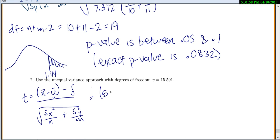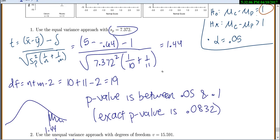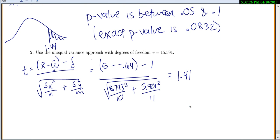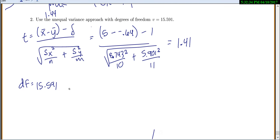For x, or our calcium, because we're doing calcium first, it's 5 minus our negative 0.64. Our hypothesized mean is 1. That's the number there in that null hypothesis. Square each of those standard deviations. Make sure you do the calcium first because that's what we're doing first. So 8.743 squared over its sample size, and 5.901 squared over its sample size of 11. So 1.41. And I told you the degrees of freedom is 15.591. We'll round. We always round down, so we'll round to 15.